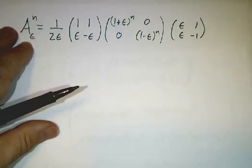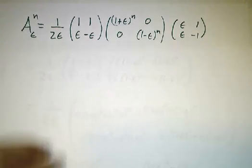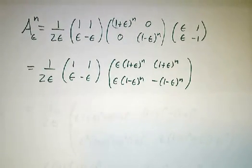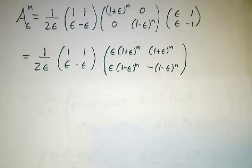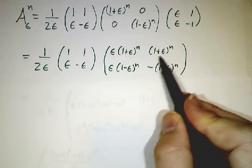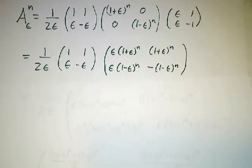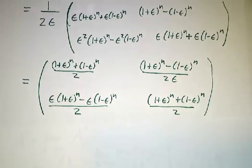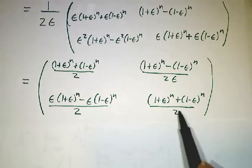Okay, and then we just multiply it out. This term times this gives you some expressions involving 1 plus epsilon to the n and 1 minus epsilon to the n. And you finish multiplying the whole thing out. And you wind up with this mess. Okay, it's a mess.